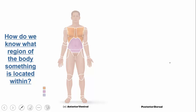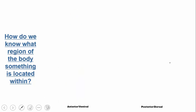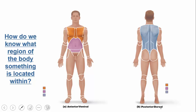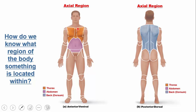How do we know what region of the body something is located in? The anterior side is the front of the body; the posterior side is the back. The axial region refers to the trunk or center portion of the body. Within the axial region: the thoracic region is the chest, the abdomen is around the belly button, and there's also the back region on the posterior side.